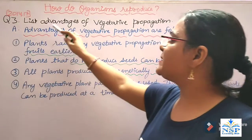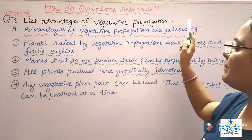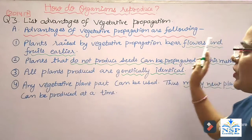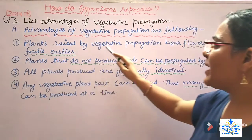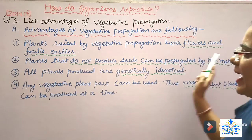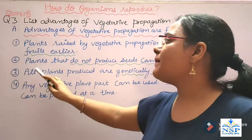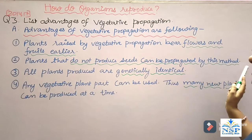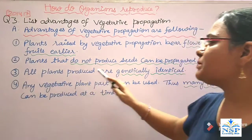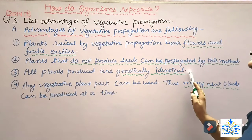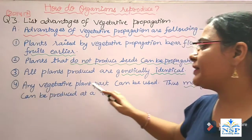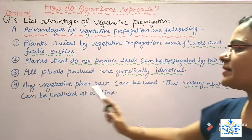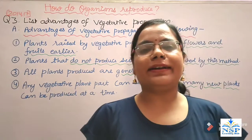Our next question is: list the advantages of vegetative propagation. Advantages of vegetative propagation are as follows. Plants raised by vegetative propagation bear flowers and fruits earlier. Plants that do not produce seeds can be propagated by this method. All plants produced are genetically identical. Any vegetative plant part can be used, and thus many new plants can be produced at a time.